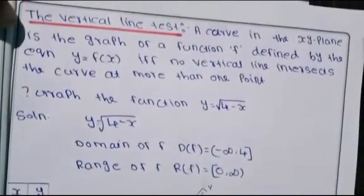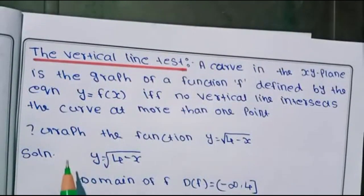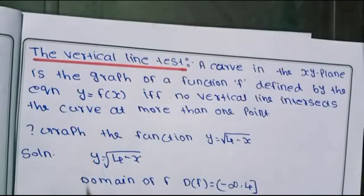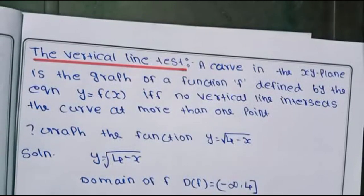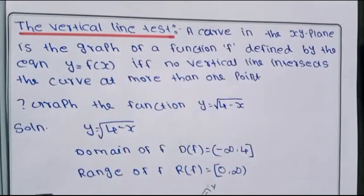Now, the formal statement: a curve in the xy-plane is the graph of a function f defined by the equation y = f(x) if and only if no vertical line intersects the curve at more than one point. That is, if a vertical line of that graph passes through more than one point, the vertical line test fails.